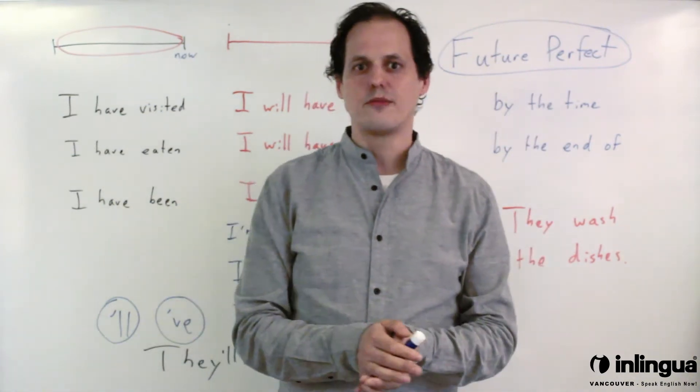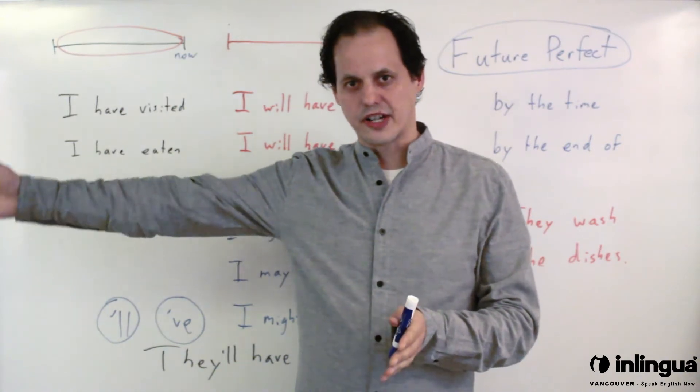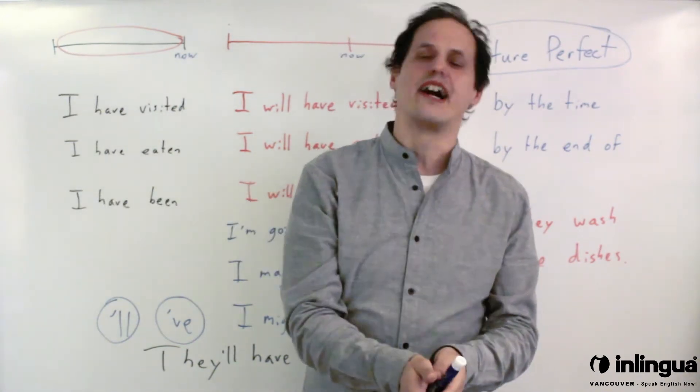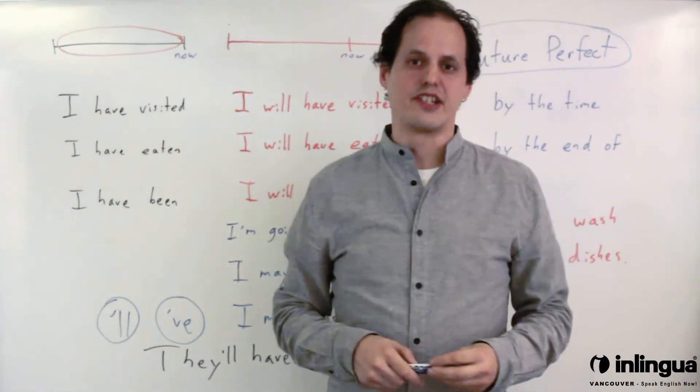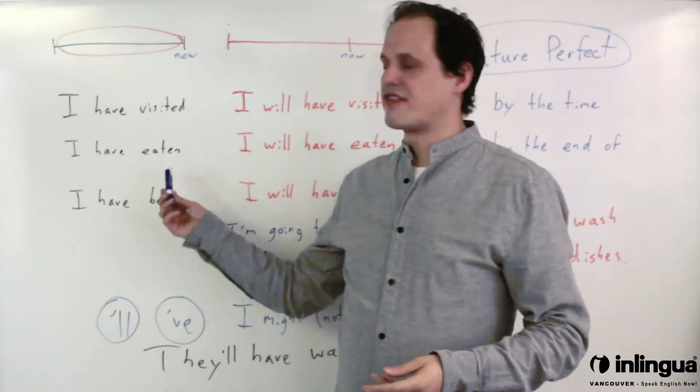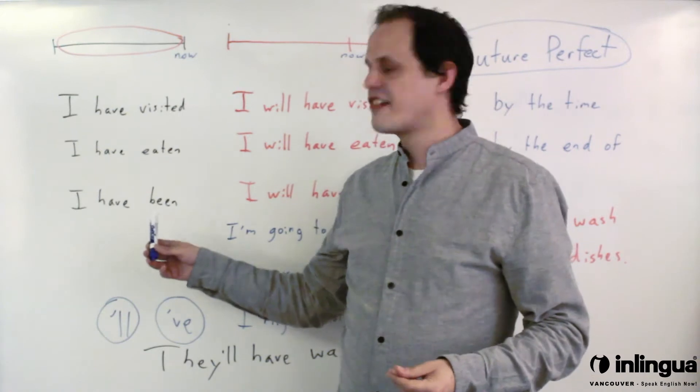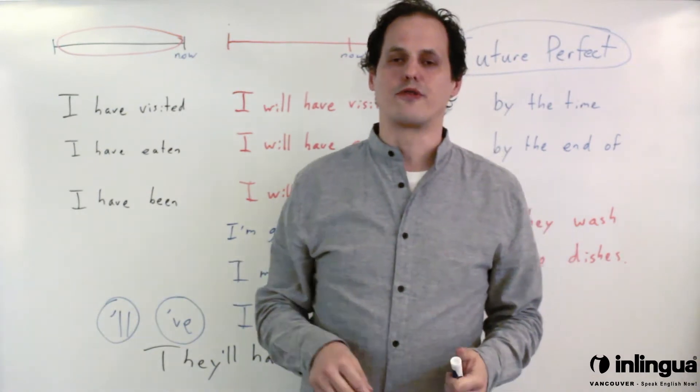You already know about present perfect and how we use it to talk about our experience from the past up to now. So for example you could say I have visited Morocco, I have eaten raw horse, I have been a student at this school for two weeks.